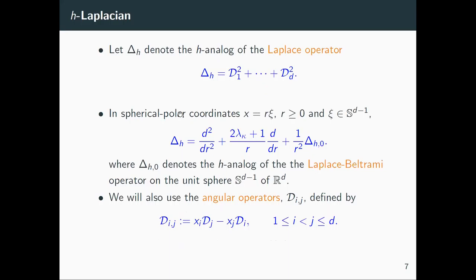Using the Dunkl operator we can define the h-analog of the Laplace operator, denoted by delta_h. In the same way as in the classical case, in spherical polar coordinates the Dunkl-Laplace operator can be represented in this expression. The left part is just the radial part and the second one is the h-analog of the Laplace-Beltrami operator on the unit sphere S^{d-1}. Using the Dunkl operator we can also define the angular operator D_{ij} by this expression. In the classical case these are the angular operators; here it is something more complicated.